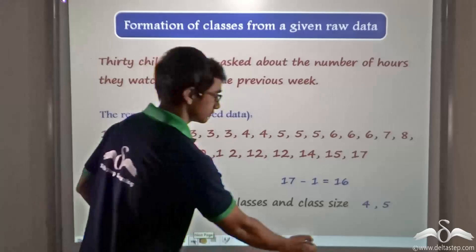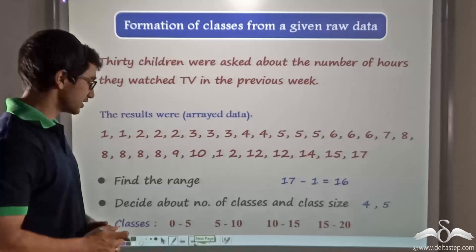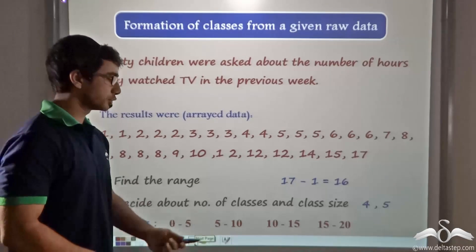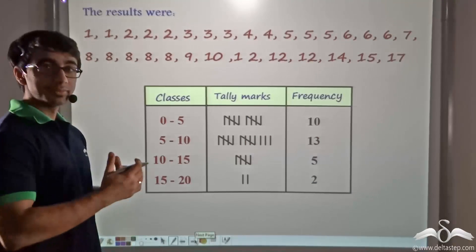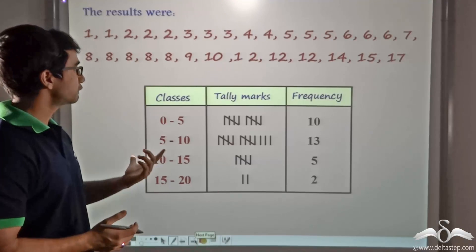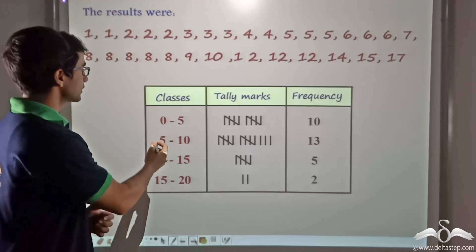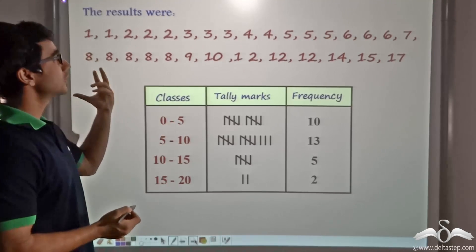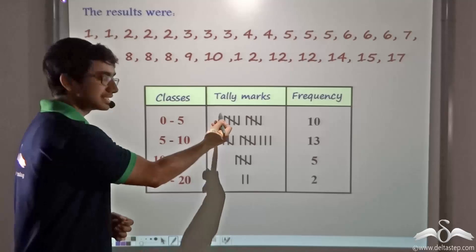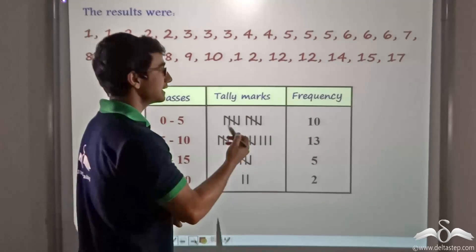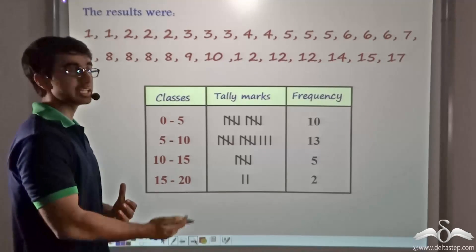So I consider 4 classes with class size 5, and the classes are 0 to 5, 5 to 10, 10 to 15, and 15 to 20. In a similar manner to what I explained previously, we can find out the grouped frequency distribution table — which in this case is continuous. For each class, we place the tally marks and from that directly tell the frequency. So as you can see, we have the grouped frequency distribution table for this data.